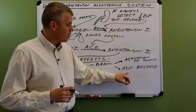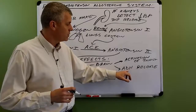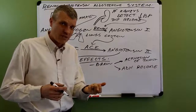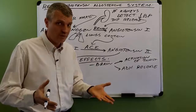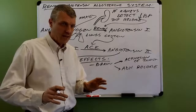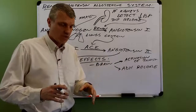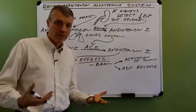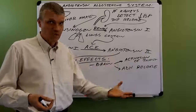ADH, or antidiuretic hormone, also known as vasopressin, is synthesized by the hypothalamus but released by the posterior pituitary gland. A diuretic causes greater urine volume; this hormone does the opposite — it's antidiuretic. ADH tells the kidneys to retain more water, so there will be more water in the bloodstream, again increasing blood volume and blood pressure.